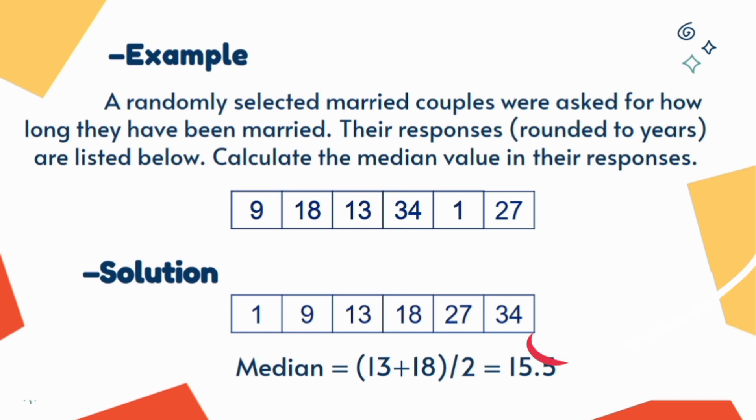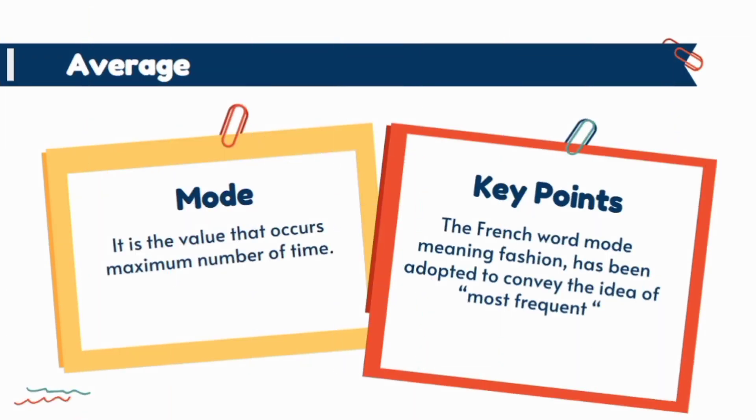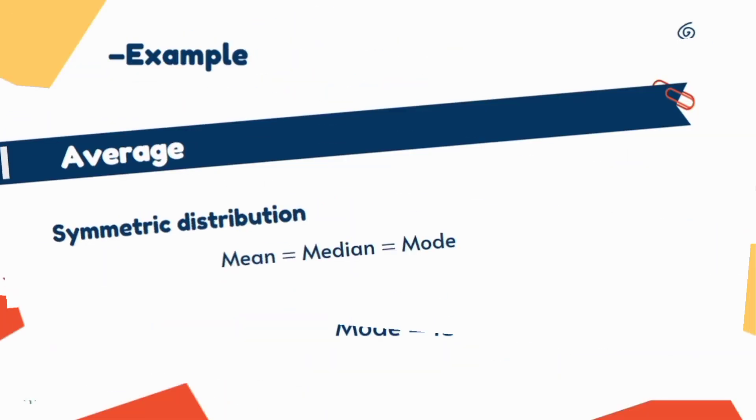Mode is most frequent value in data set. As in last example all values occur at the same number of time, there is no mode. And if we add few values in the data set then in this situation mode is this value.